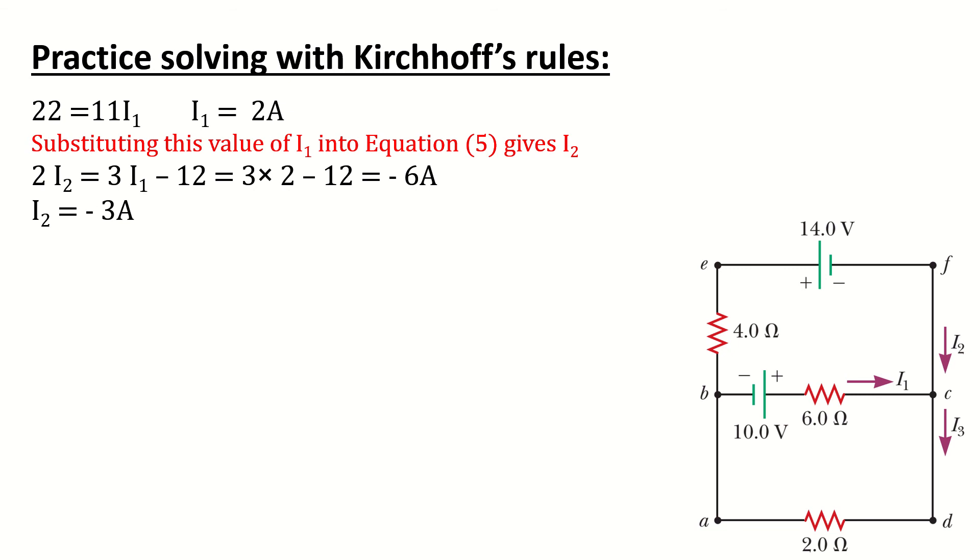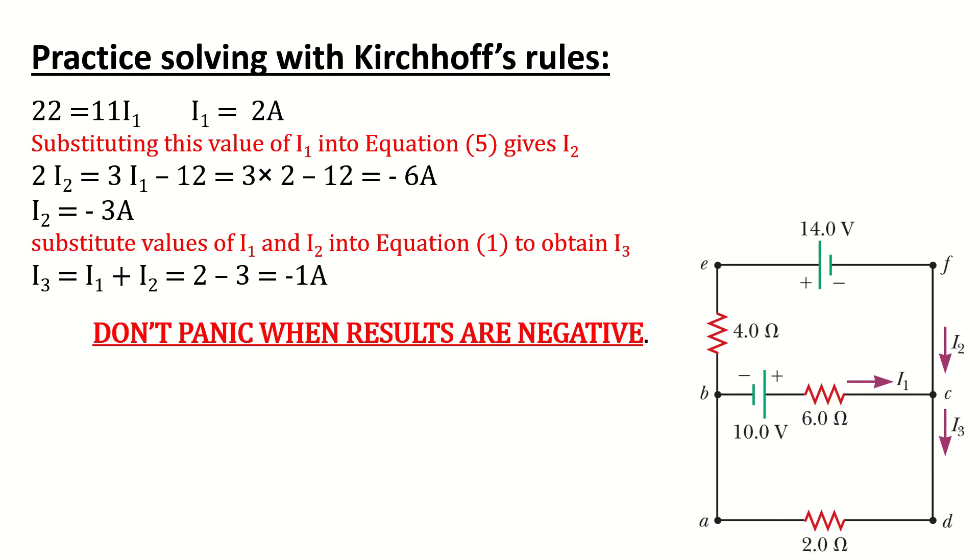I2 equals negative 3 ampere, and substitute these values of I1 and I2 into equation 1 to obtain I3, therefore I3 equals negative 1 ampere. Don't panic when results are negative. It just means that proposed direction of current needs to be reversed.